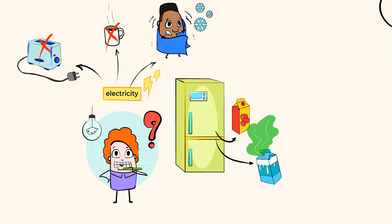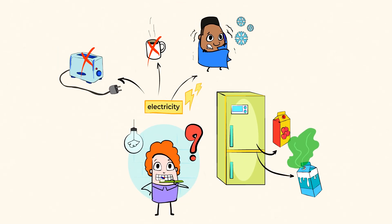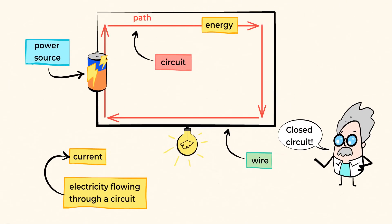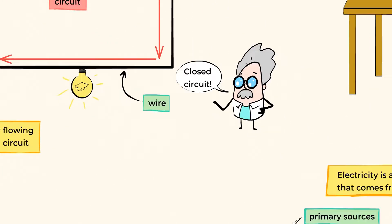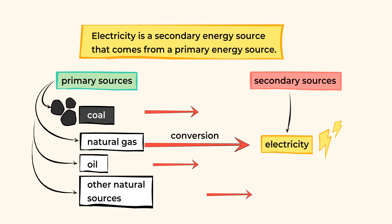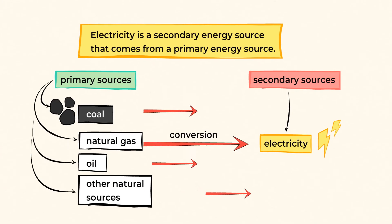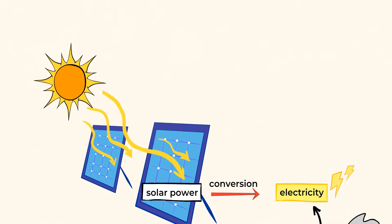As you can see, electricity is all around us. Electricity is the flow of electrical power. We get it from the conversion of other sources of energy, like burning coal, or natural gases, or other natural sources, like the sun, or the wind, or even water.